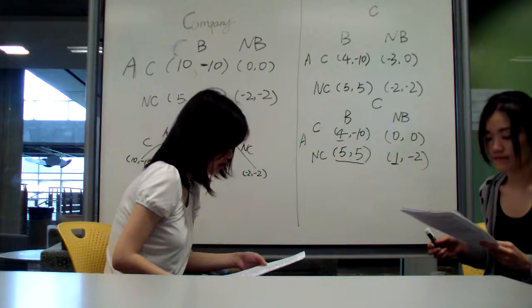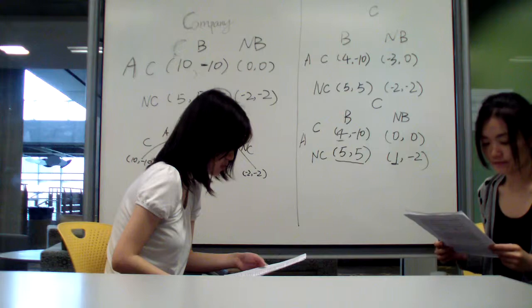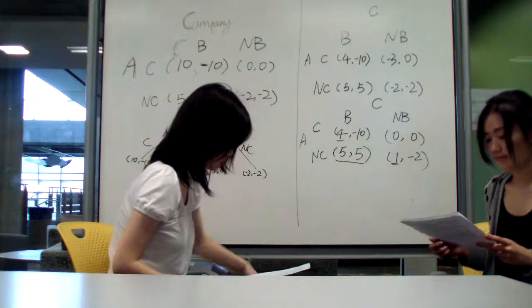We will conduct further investigation on the credibility of the information the applicants provided. For the applicant who does not cheat, there is going to be more chance to get another interview and get a better chance to be hired. In this case, the payoff changes from minus 2 to 1, and the Nash equilibrium becomes NC and B.